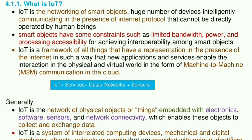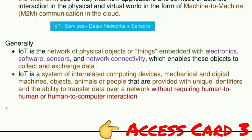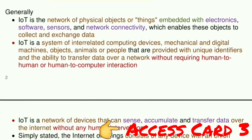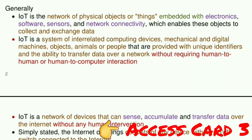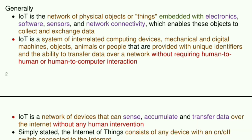IoT is a framework of all things that have a representation on the internet, in such a way that new applications and services enable interaction in the physical and virtual world in the form of machine-to-machine, M2M, communication in the cloud. Generally, IoT is the network of physical objects or things embedded with electronics, software, sensors, and network connectivity, which enables these objects to collect and exchange data.